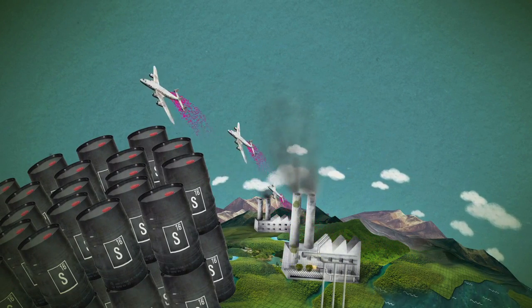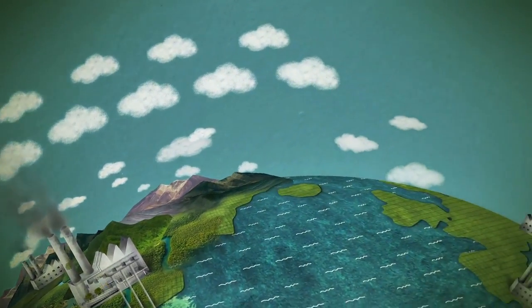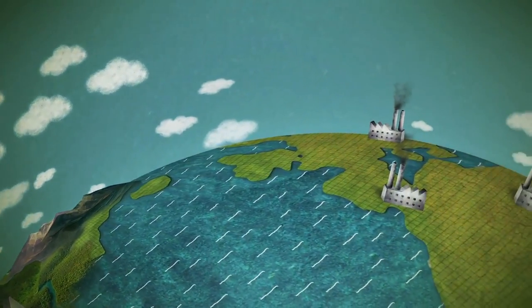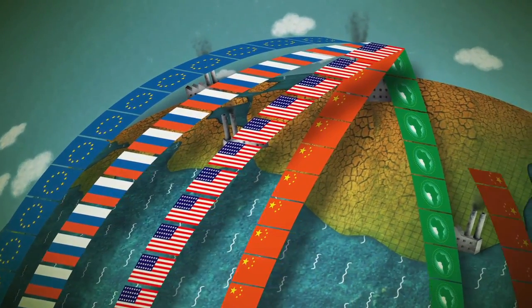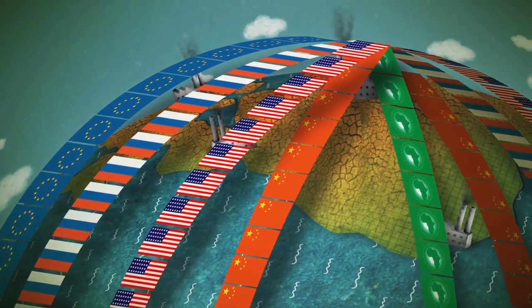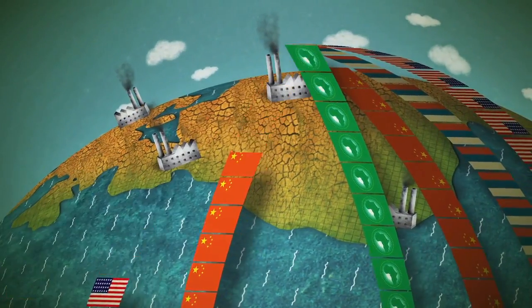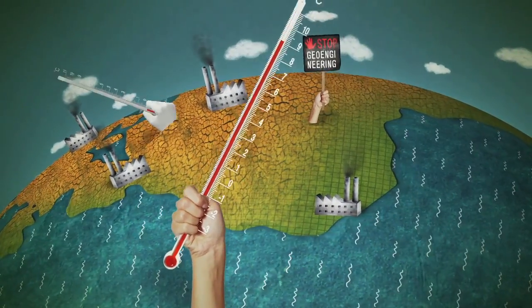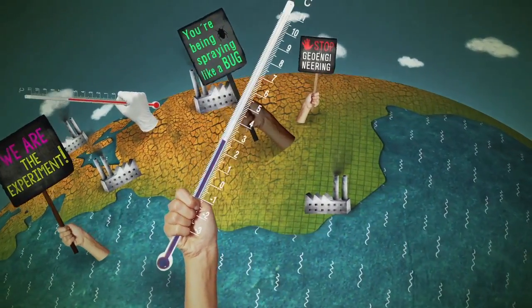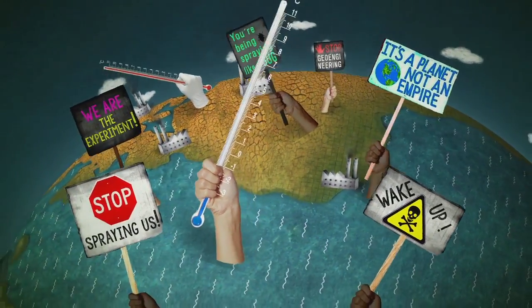If solar radiation management is associated with such great risks and regionally divergent effects, how should an international consensus for its implementation ever be reached and maintained over centuries? And if no consensus is possible in the first place, who would come out on top, setting the global thermostat to suit their own interests? How would those who are most vulnerable to the negative impact make their voice heard?